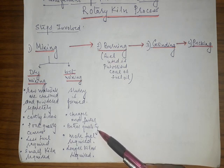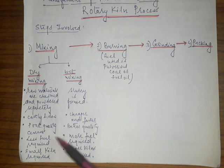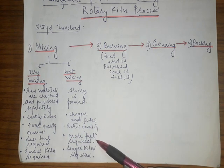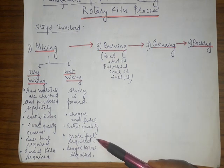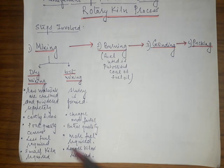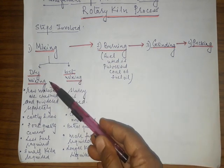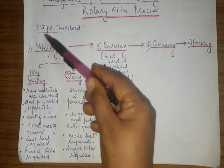In dry mixing, less fuel is required because there is no need to dry the mixture in the kiln, and smaller kilns are sufficient. In wet mixing, since the slurry must first be dried, more fuel is required and longer kilns are needed to accommodate the drying process as well.